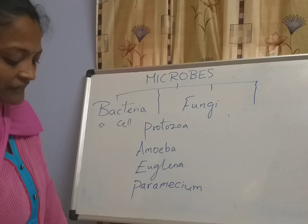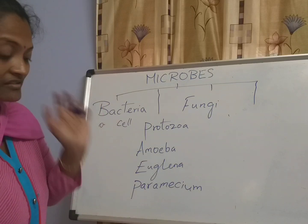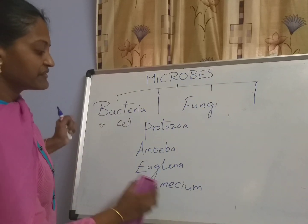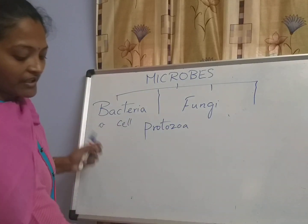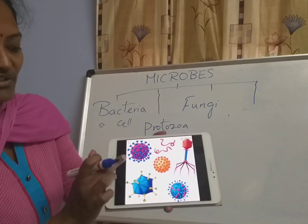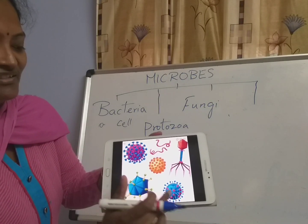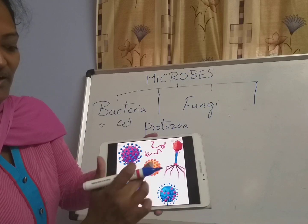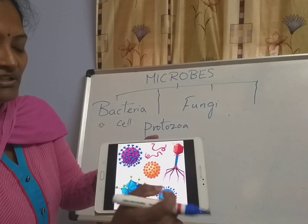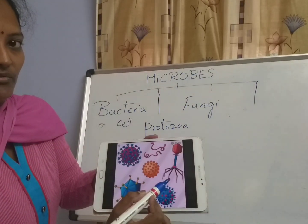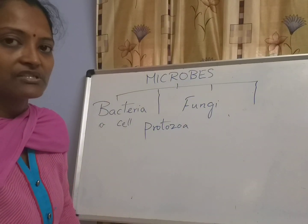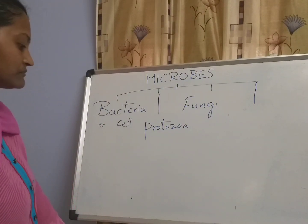Coming to virus — I said it is not a living thing. See the shapes of the virus. Our coronavirus looks like this — it has projections, meaning outgrowths. It starts sticking to any cell on contact.